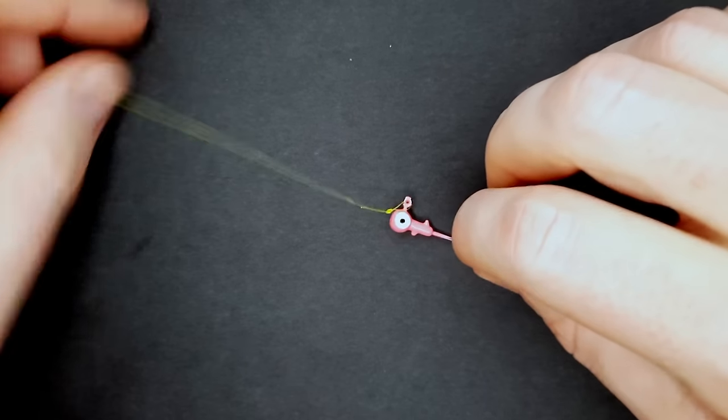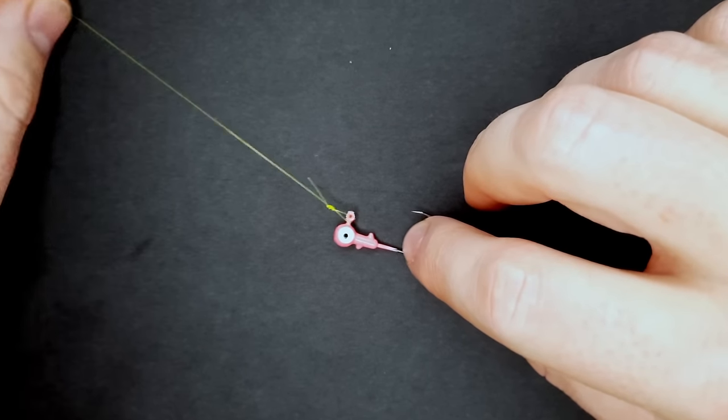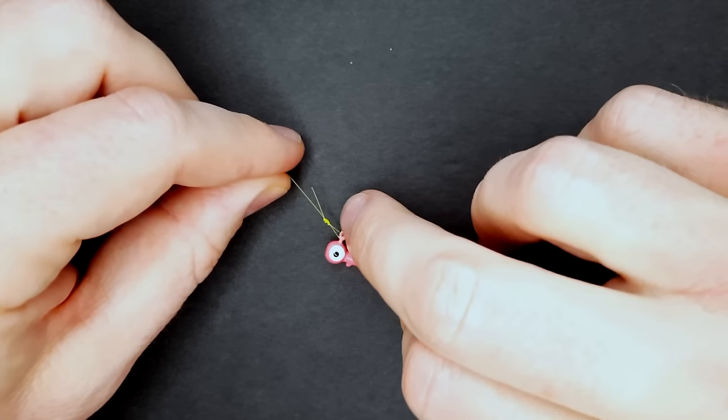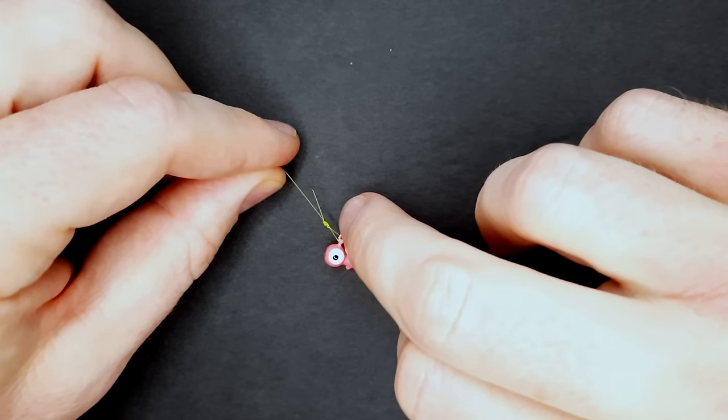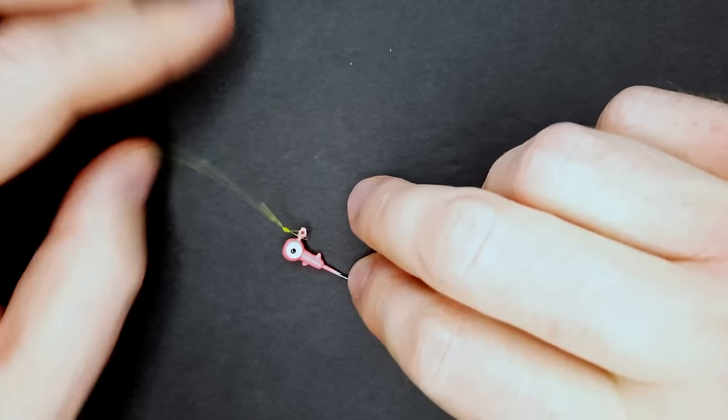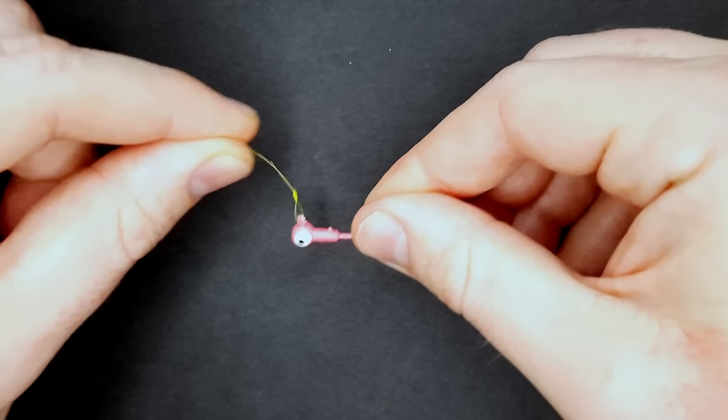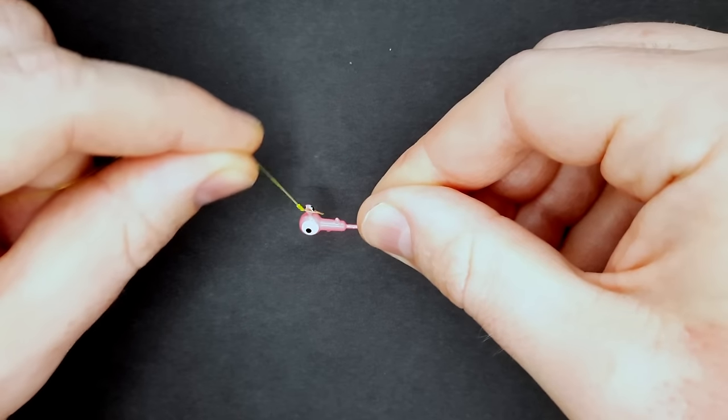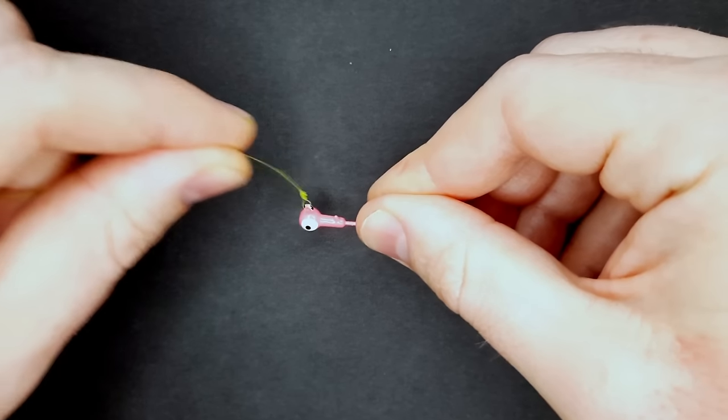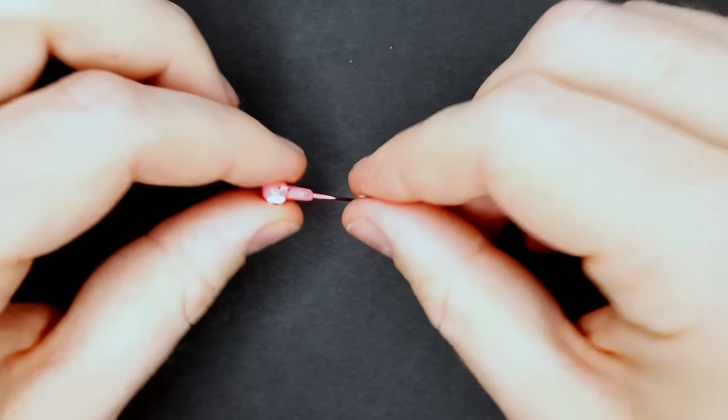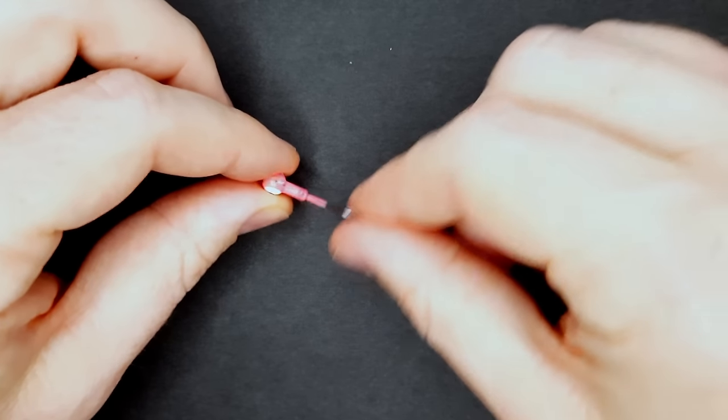Just like that. Now you've completed the loop knot. You can see how the loop knot gives you a gap around the knot and the eyelet, so you can see how much maneuverability you got with that knot. This jig will be able to do whatever it wants to do in the water, so it acts a little more lifelike.